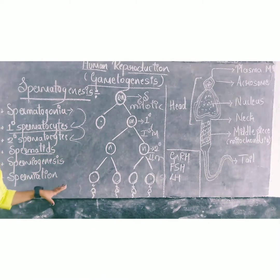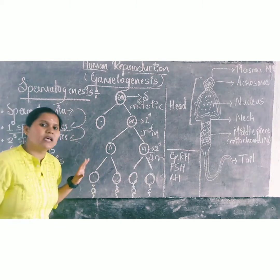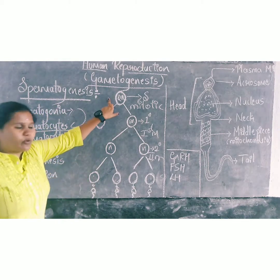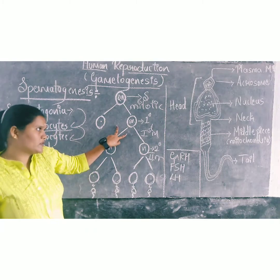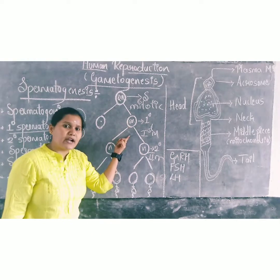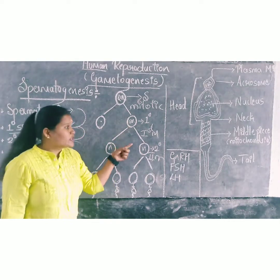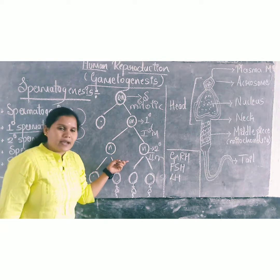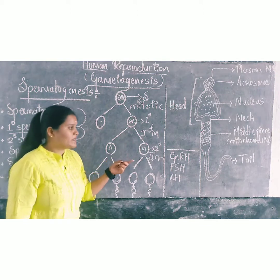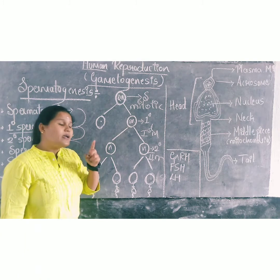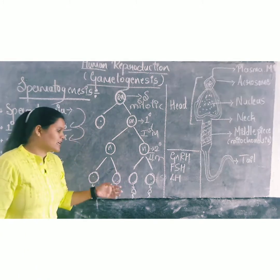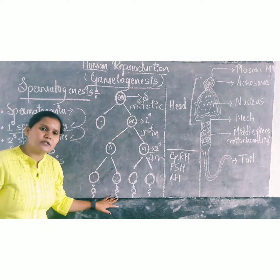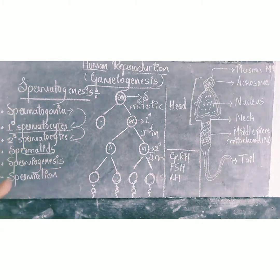This is how spermatogenesis occurs. Spermatogonia undergoes mitotic division and produces primary spermatocytes. These primary spermatocytes undergo first meiotic division to form secondary spermatocytes. The secondary spermatocytes undergo second meiotic division and form spermatids. These spermatids transform into sperms. This process is called spermiogenesis.